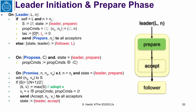Here is the algorithm for the prepare phase and leader initiation. If a proposer gets an event saying the leader is L and the round number is N: if I am the leader and N is larger than any number I have accepted in the past, then I become a leader. Otherwise, my state is follower and the leader is L, somebody else. We have a set S to collect promises from acceptors, and we change our state to leader prepare. The set of proposed commands is initially empty, and the initial sequence is empty.